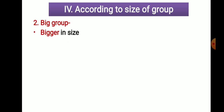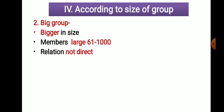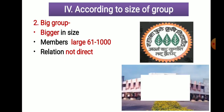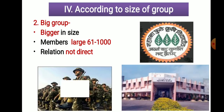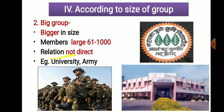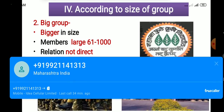The second type is the big group — bigger in size, with more members: from 61 to 1,000 or even more. Relations are not direct; there are no personal relationships or personal contacts. Examples are university, army, government organizations, and industrial organizations — large numbers of members with indirect relationships.